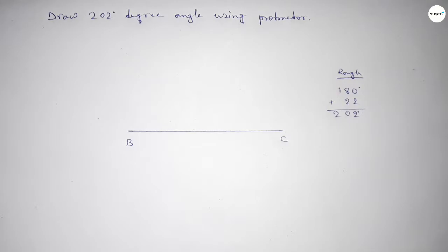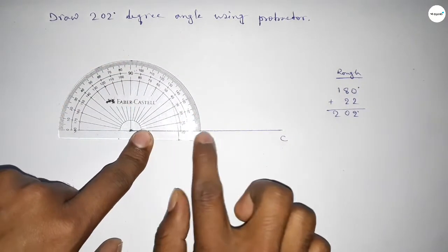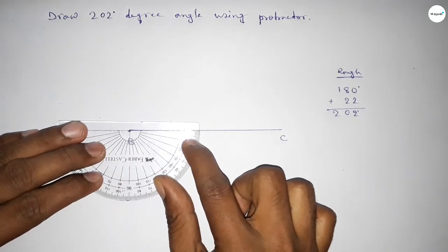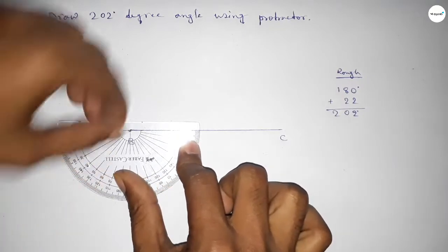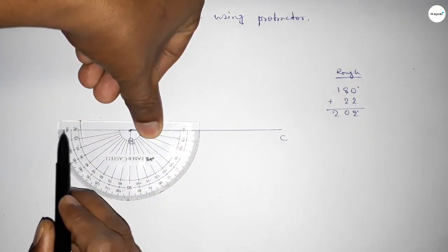So first counting 180 degree angle. Putting the protractor on point B by this way and counting the angle. So this is 180 degrees. Plus, putting the protractor on point B by this way and counting 22 degree angle.